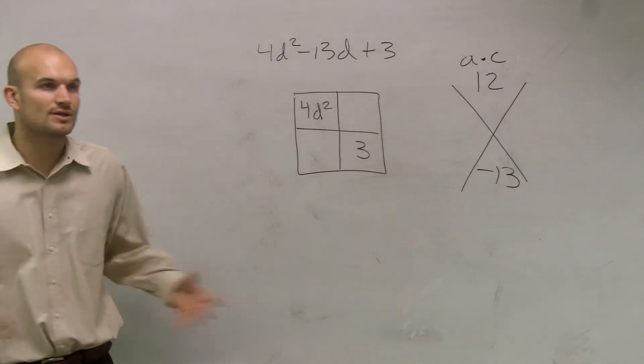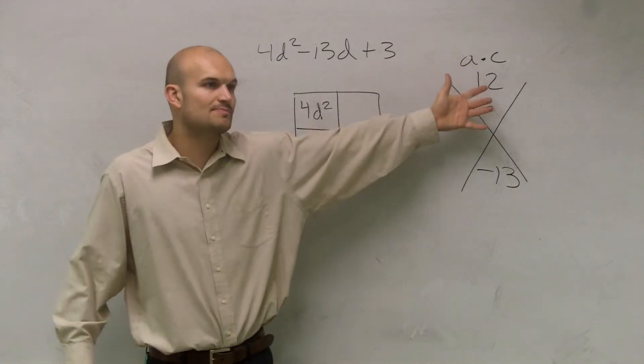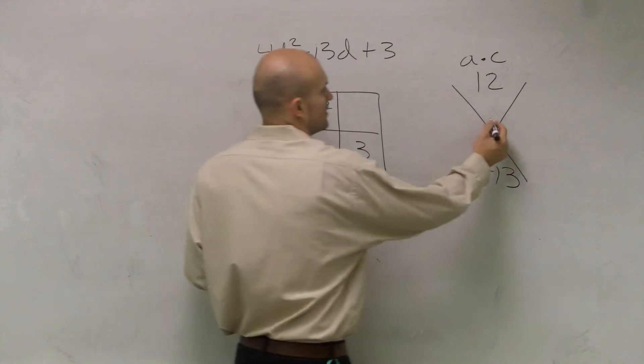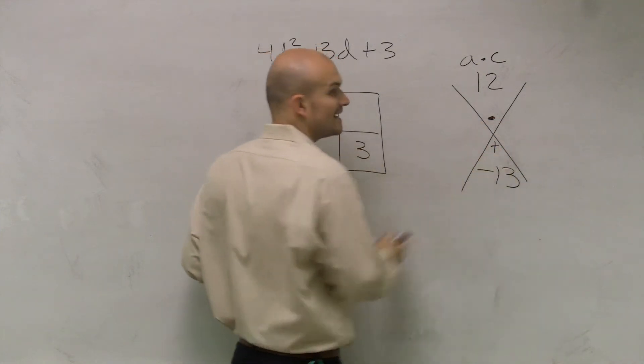So a lot of you got to this point, and now we need to think what two numbers multiply, give us a positive 12. But when we add them together, give us a negative 13, right? Multiply, give us 12, add, give us a negative 13.